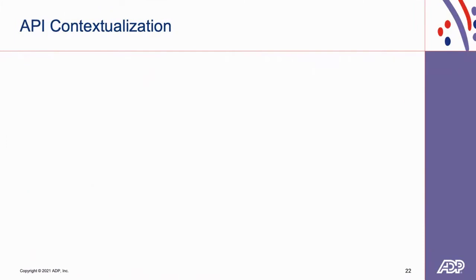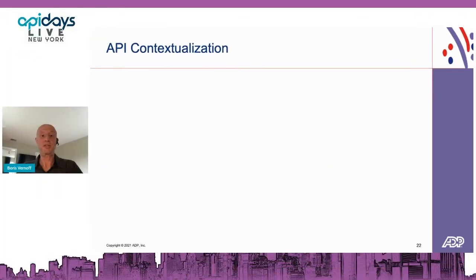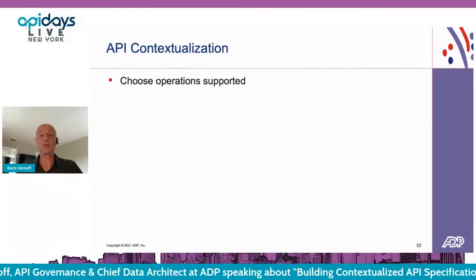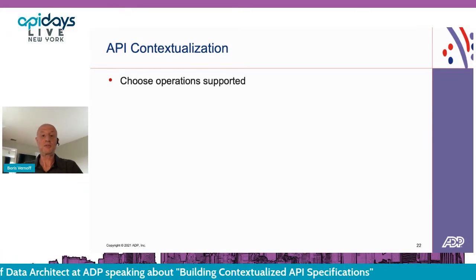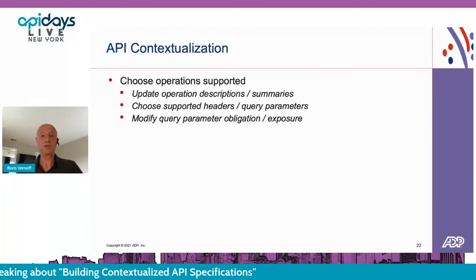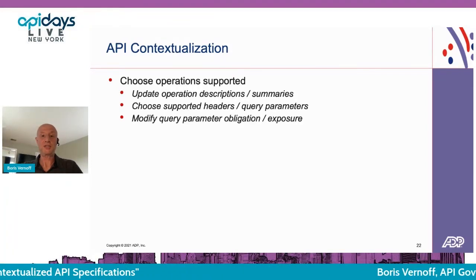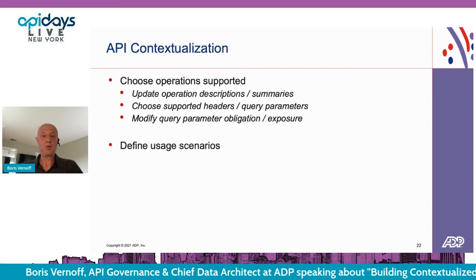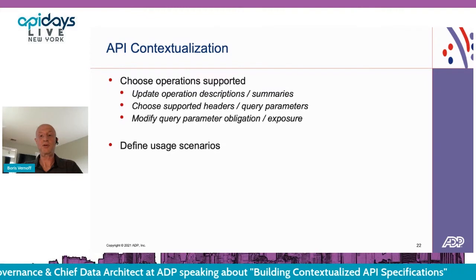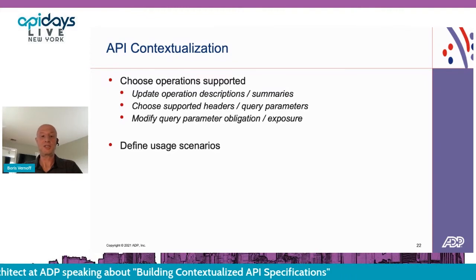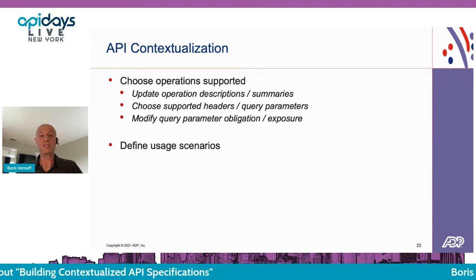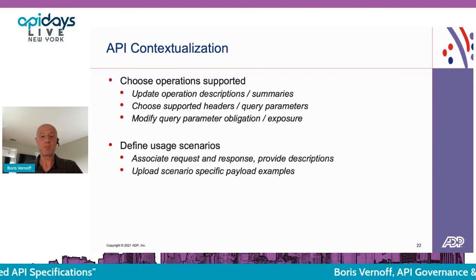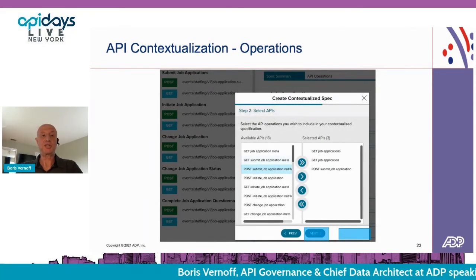To contextualize an API specification, we start with selecting supported operations, since there are certain use cases where different capabilities could be offered based on subscription or level of service purchased. This step also includes updating descriptions, and parameters — headers and parameter obligation could differ for different providers, especially citing defaults if missing. Usage scenarios allow for grouping requests and potentially different responses together, since business users are often more interested in how a particular operation is integrated in a larger business process. Here's the slide demonstrating operation selection.